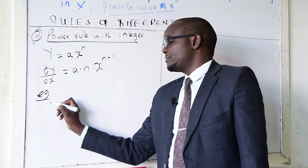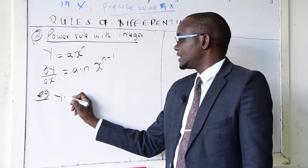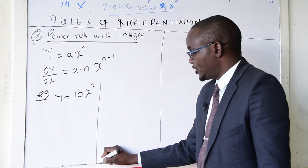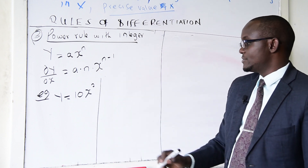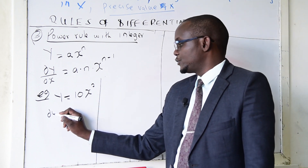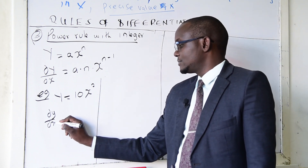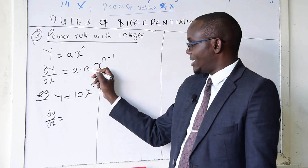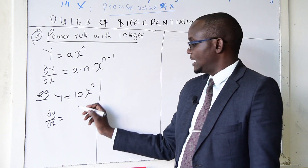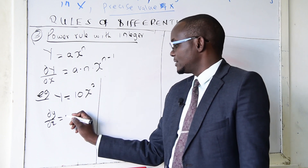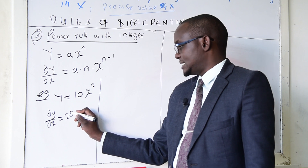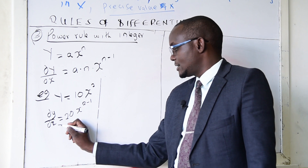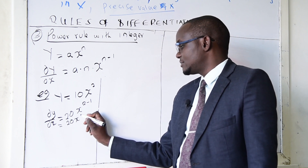Example: y equals 10x^2; find dy/dx. You take the integer 10 and multiply by the power 2: 2 times 10 is 20. The new power is 2 minus 1, so the answer becomes 20x^1.